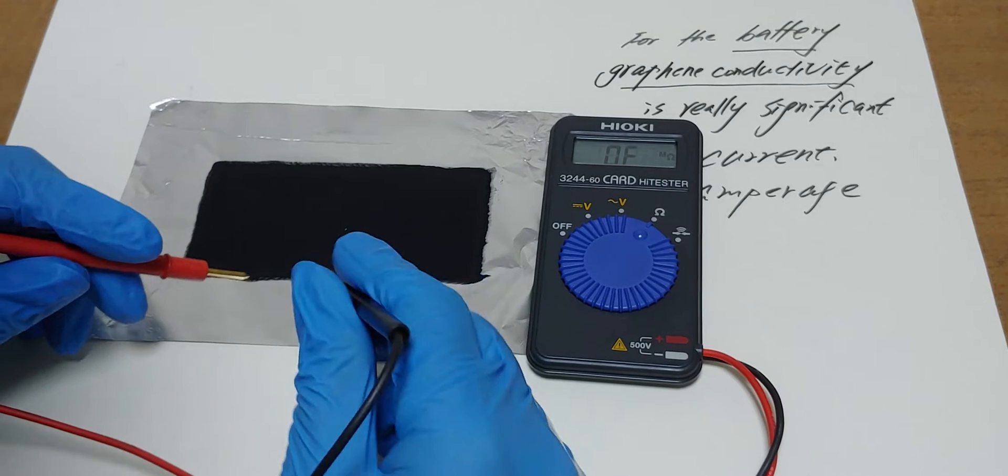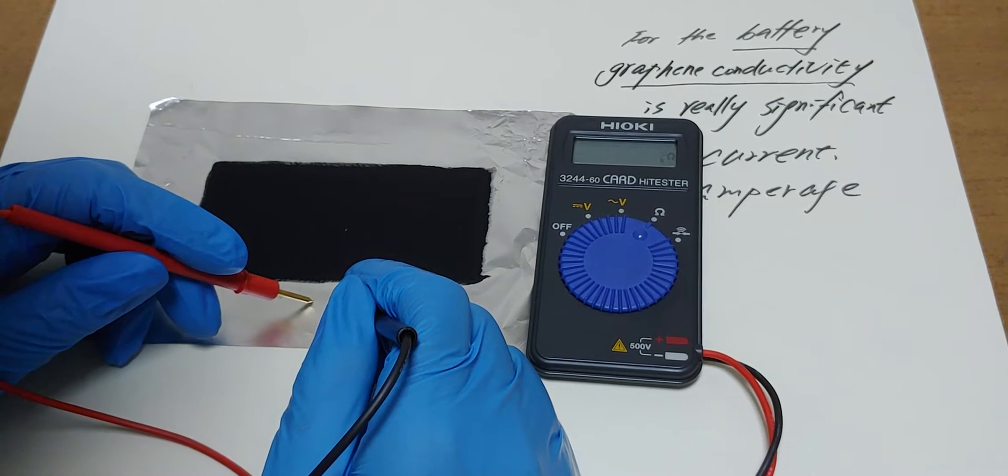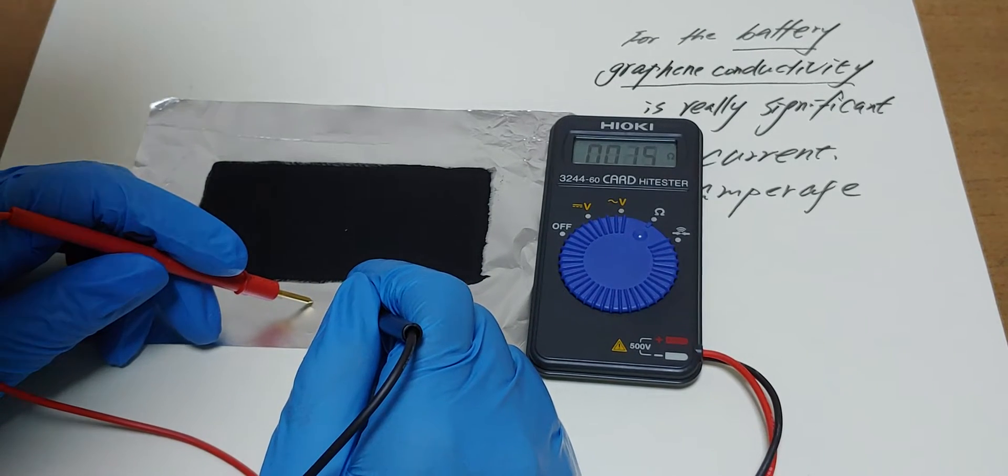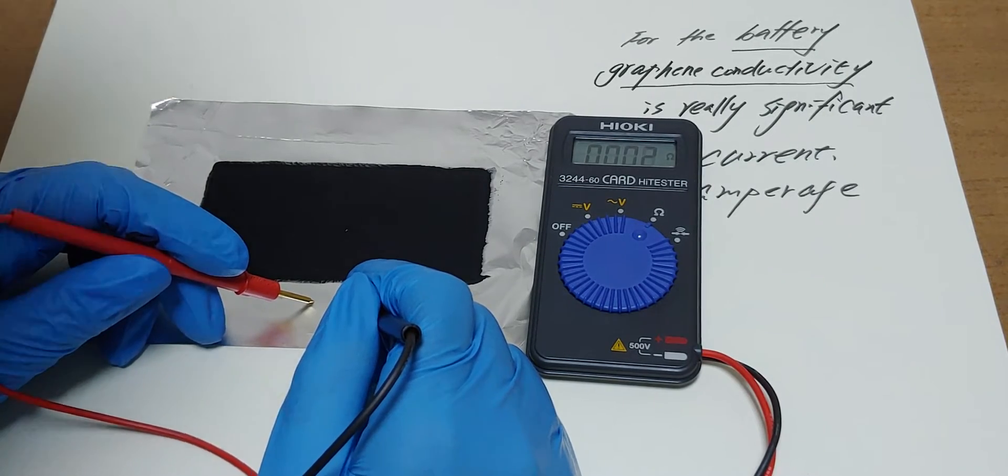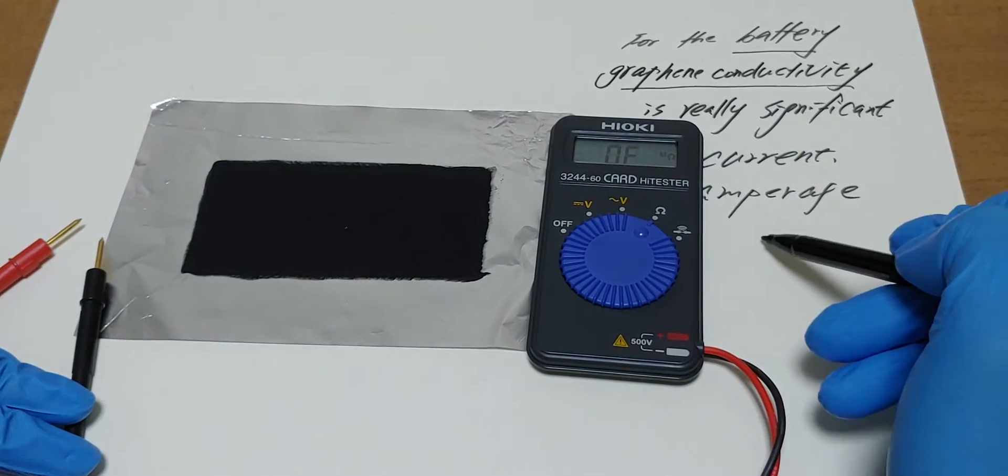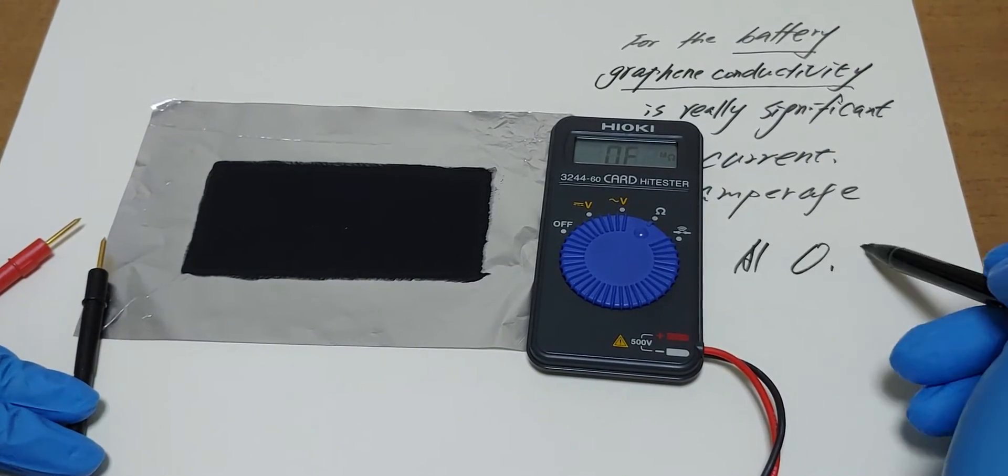First, the ohm of aluminum is 0.3. Aluminum, 0.3.